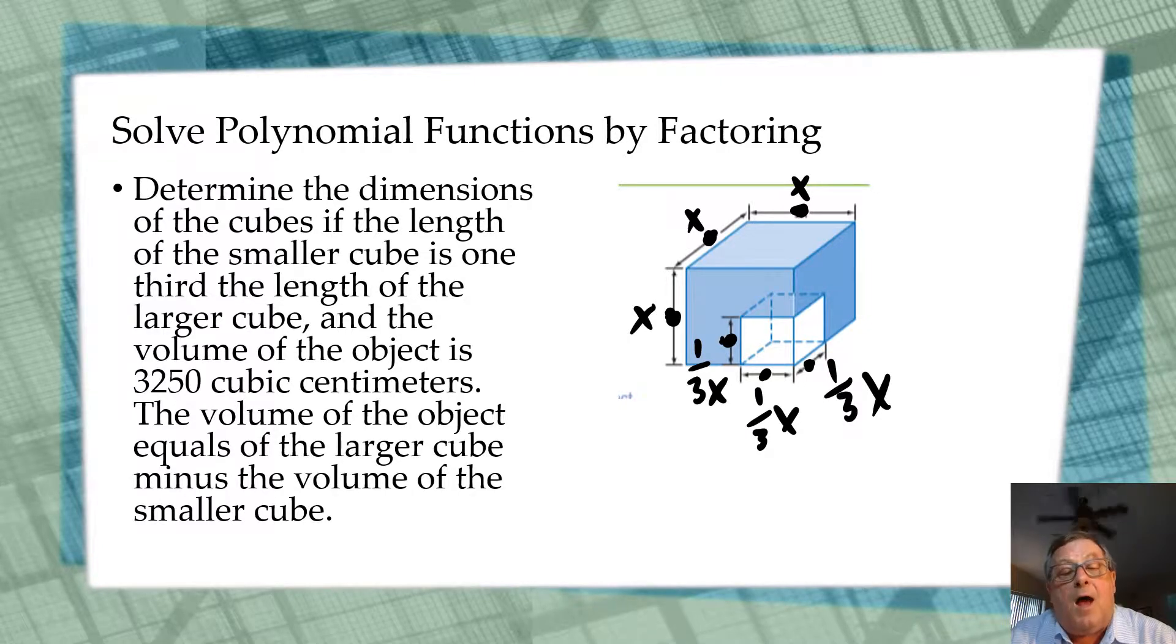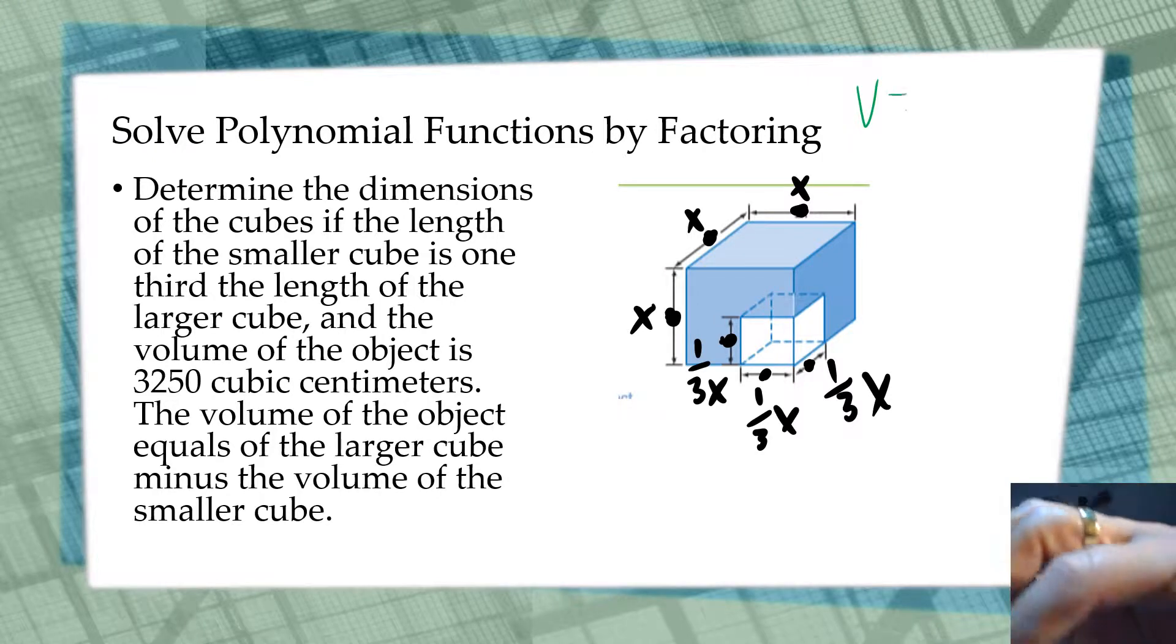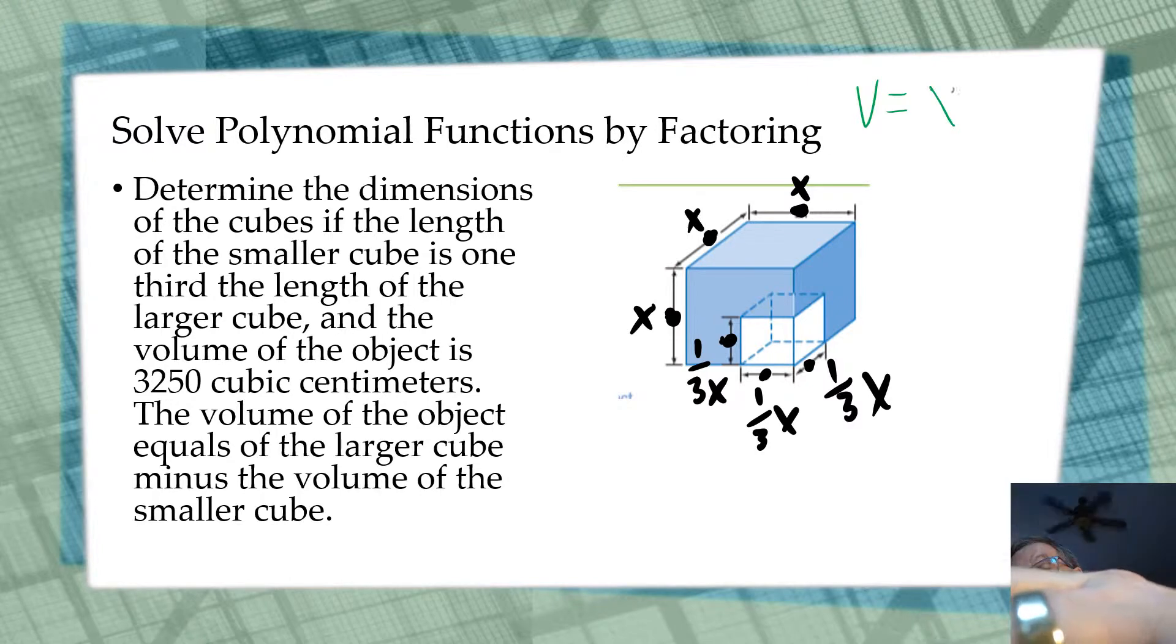The volume of the object, what they're talking about is what's in blue, is actually the larger cube minus the volume of the smaller cube. So if the volume of a cube equals the side's length, width, height cubed, let's call the object x cubed.